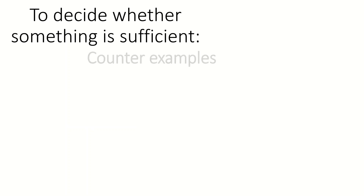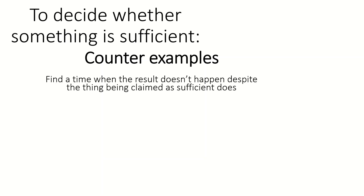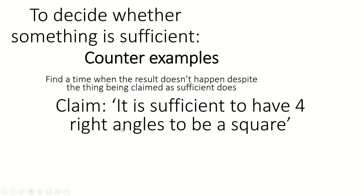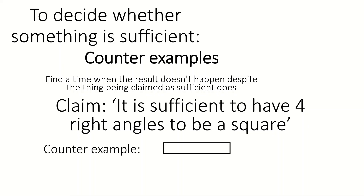To decide whether something is sufficient, it's also counterexamples, but you're using them for a slightly different purpose. You need to find a time when the result doesn't happen despite the thing claimed as sufficient happening. For example: it is sufficient to have four right angles to be a square. I need to find an example where there are four right angles but it's not a square — a rectangle. So we're requiring the first bit to be true and showing a case where the second bit isn't, which is almost the opposite of necessity.